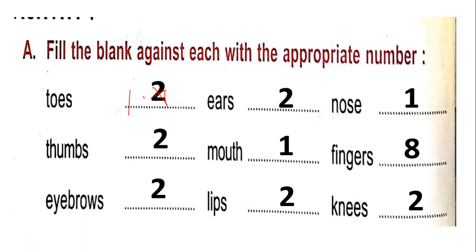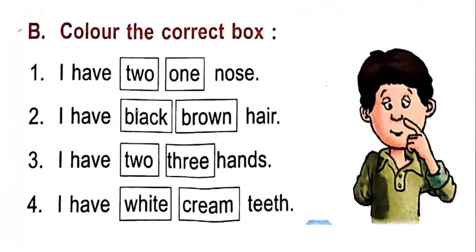Next exercise: color the correct box. We have to color the box. I have 1 nose. How many nose we have? 1 nose. So you have to color here 1.